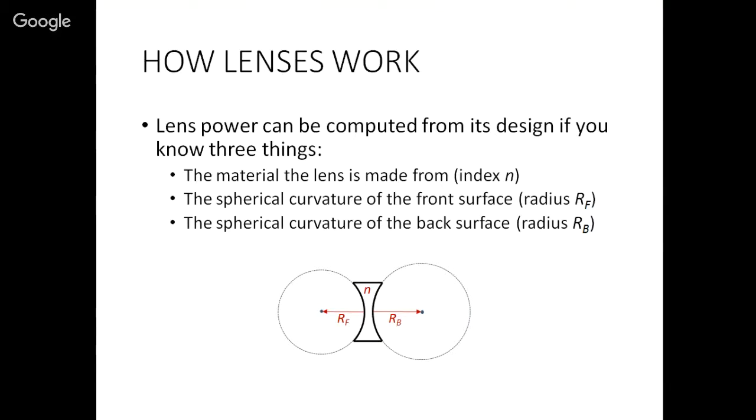Lens power in general isn't computed by where the image forms, it's actually computed based on the design of the lens. If you know what type of transparent material that the lens is made of, which is usually characterized by what's called its index of refraction, and you know the curvature of the front surface, which is characterized by the radius of a sphere that that curve would make, and you know the curvature of the back surface, which is also characterized by a radius, that's enough information to compute the amount of power that that lens has.